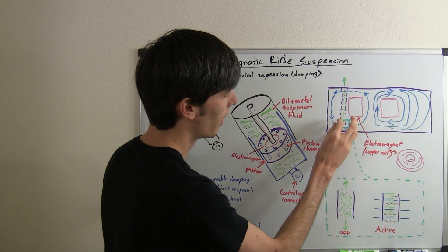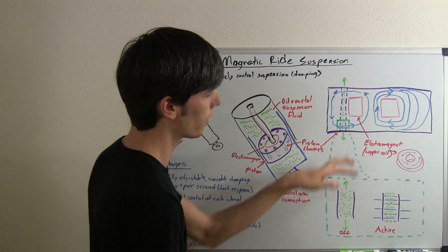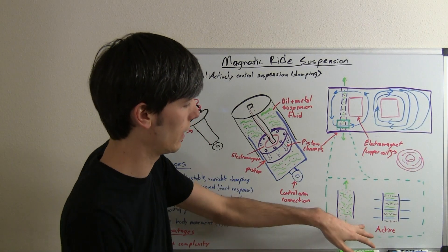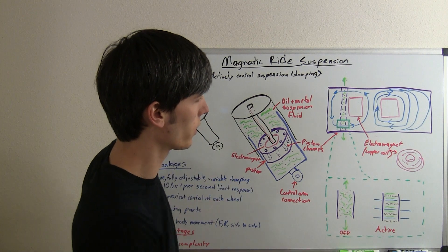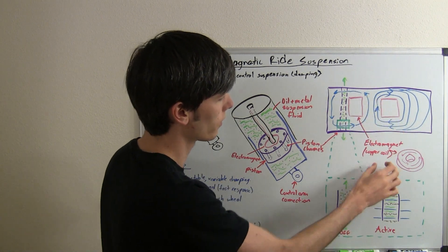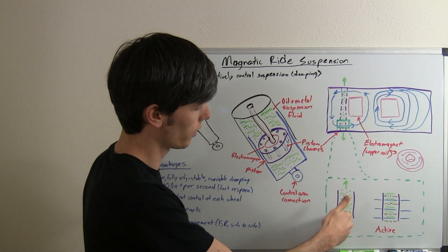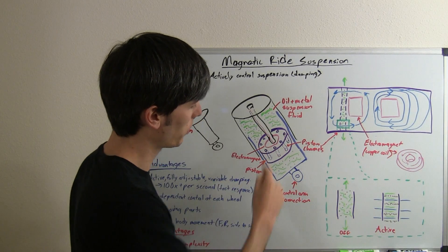If we take a detailed look at what's going on right here in this little section, you can see when you have the suspension not on, when you're not sending a current through this electromagnet, then it acts just like a regular shock absorber and the fluid can move freely through these piston channels.